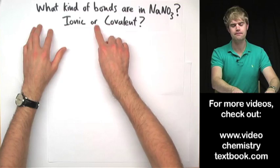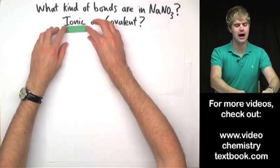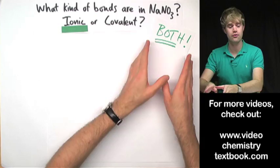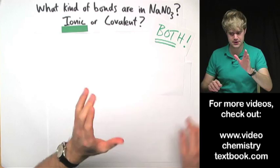Now, a lot of people say ionic bonds, but the correct answer is actually both. Both ionic and covalent bonds are in NaNO3. Let's talk about this.